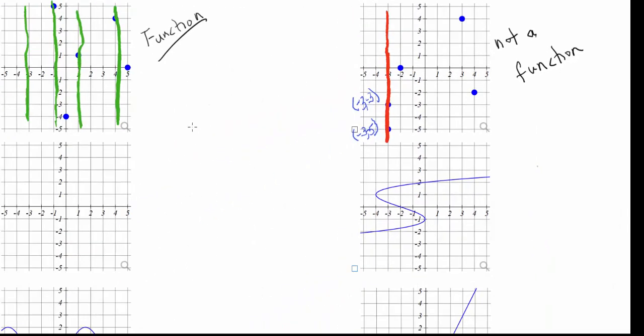So that's the idea behind the vertical line test. You want to know, does a vertical line cross the graph more than one time? If it does, then it's not a function. If no vertical line will do that, then it is a function.